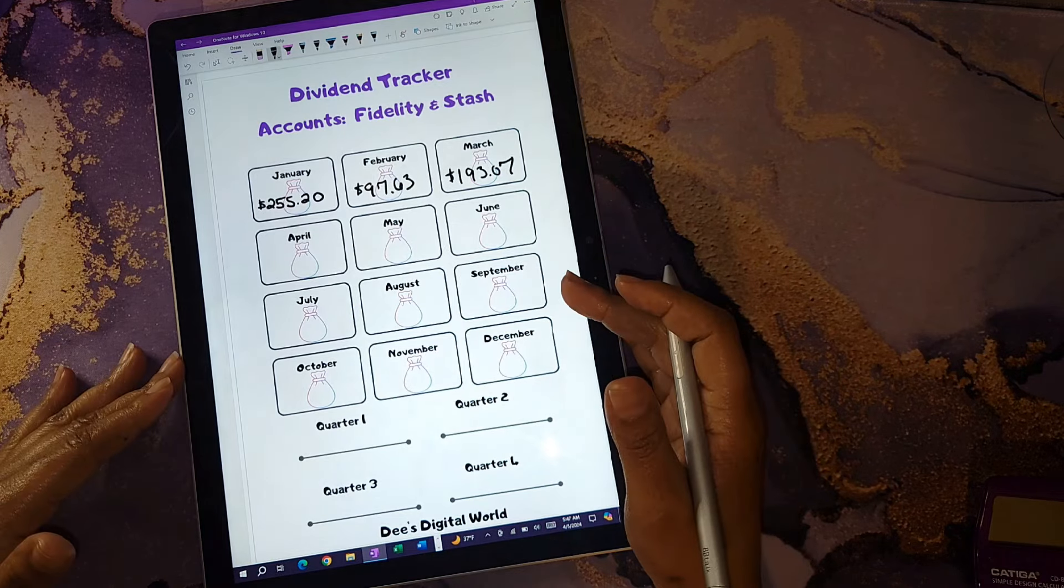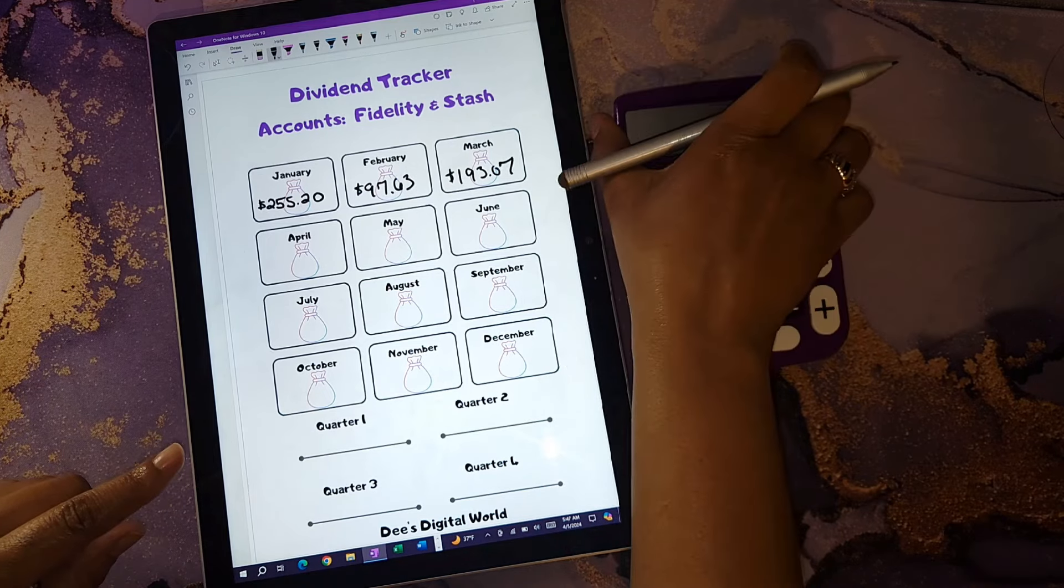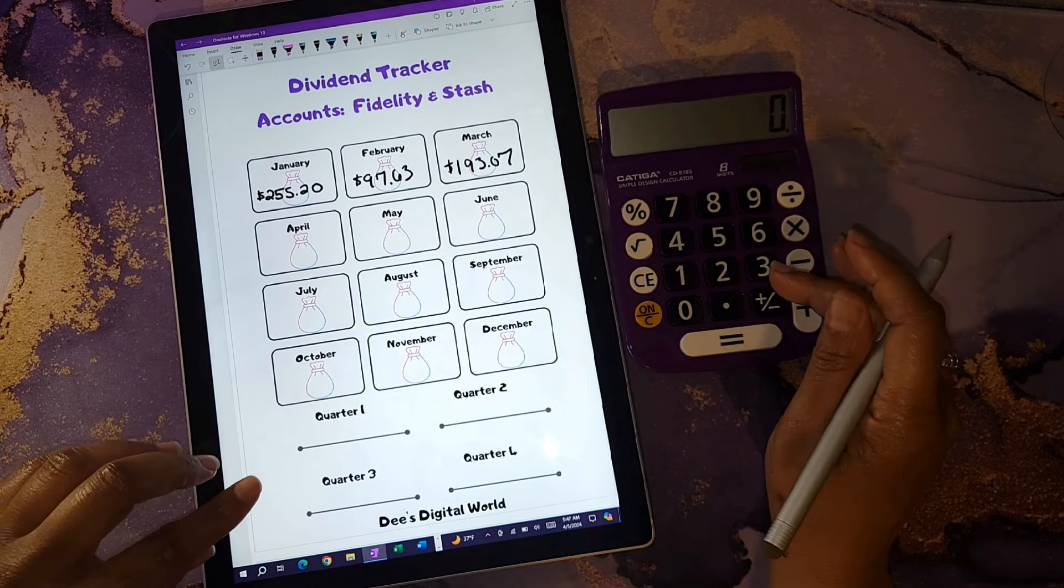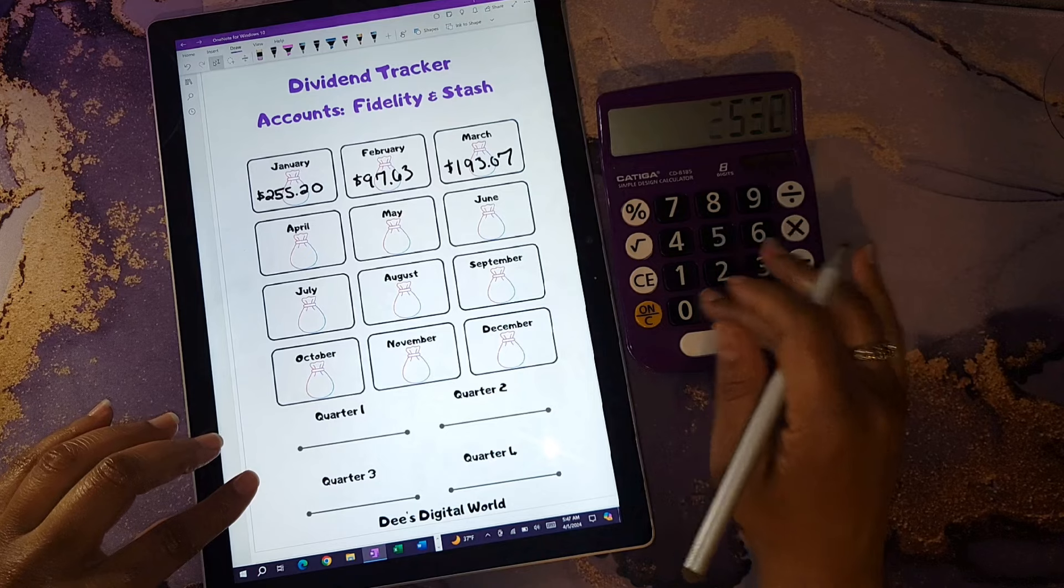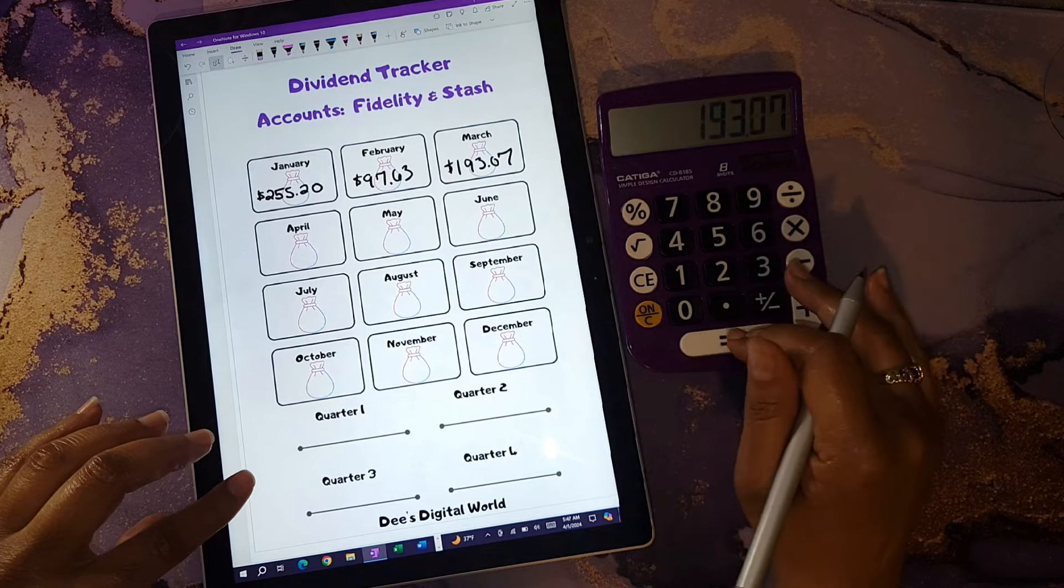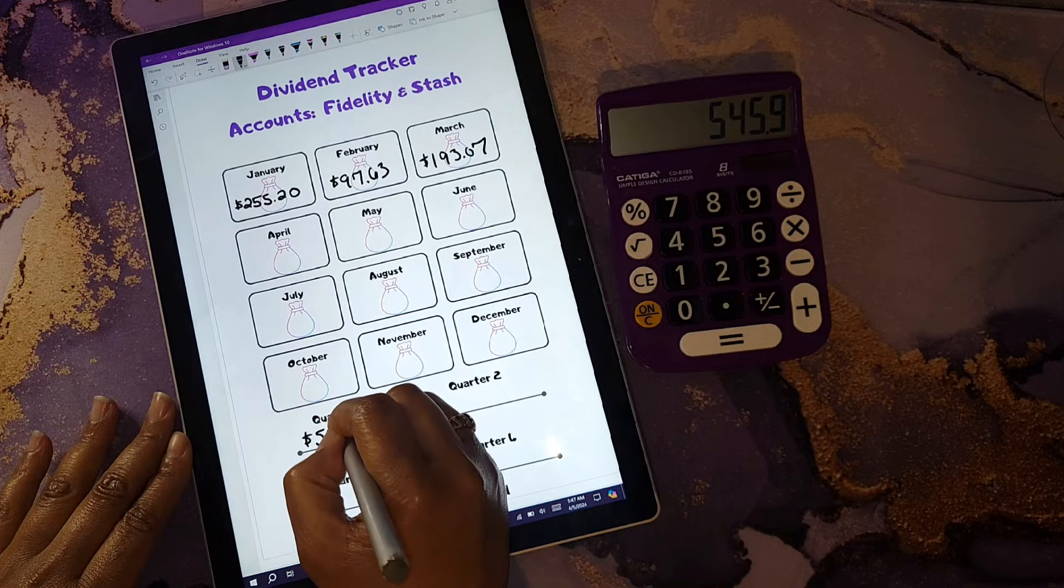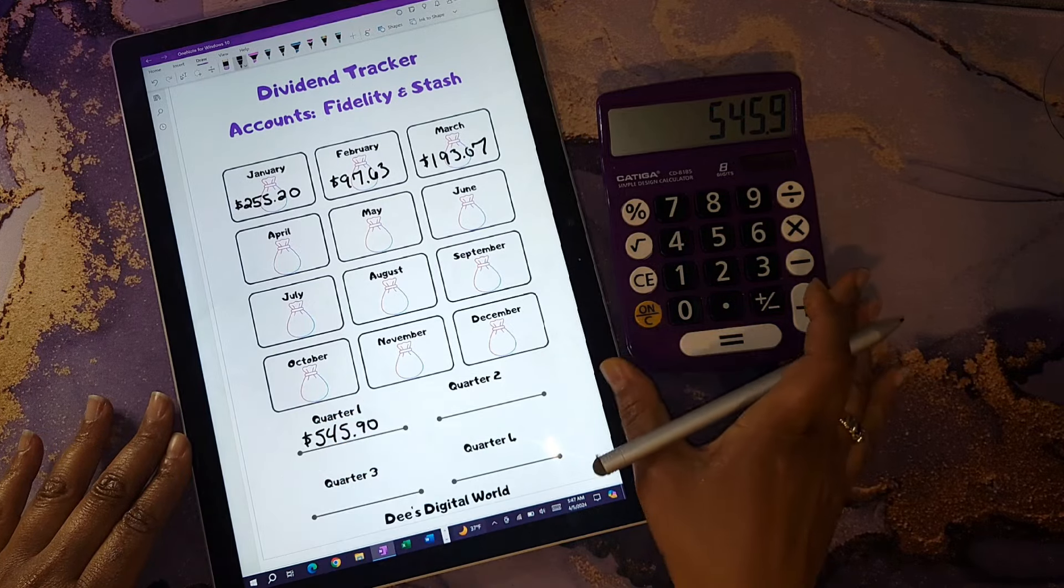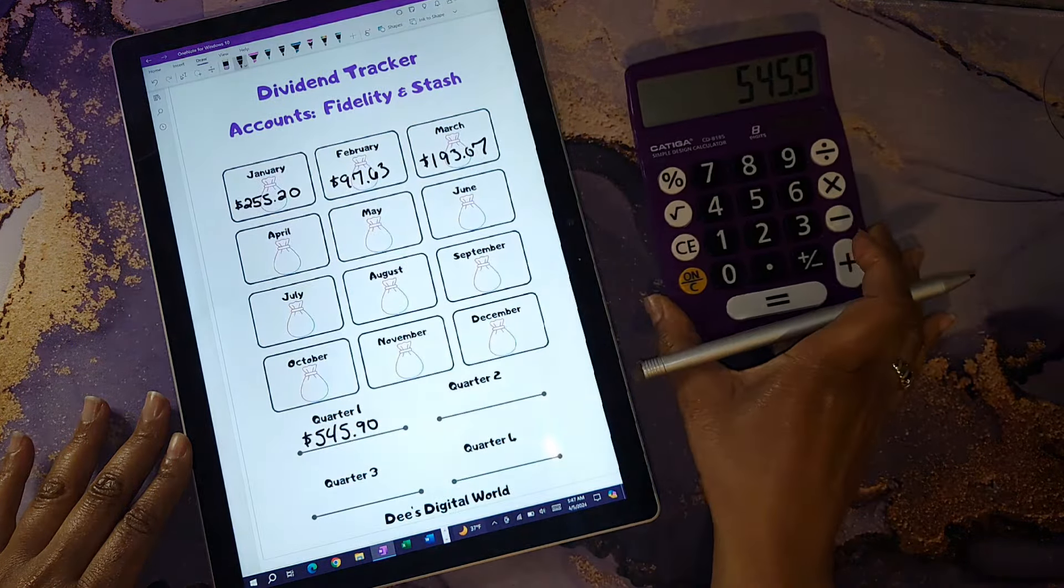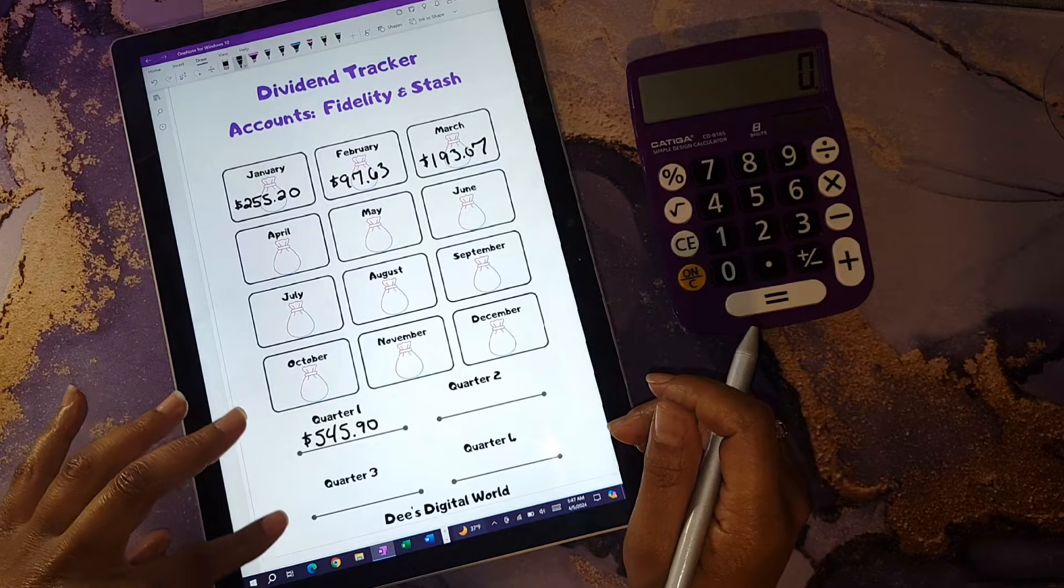So I am very appreciative of that. That was quite a bit of money to me. Now let's add up what I was able to bring in for the full quarter of 2024. I do like to track that also, and I track that down here at the bottom of this tracker. So $255.20 plus $97.63 plus $193.07, that's a total of $545.90. This right here is passive income at its finest, and since I do have most of my dividends reinvested, that just helps me build up my shares by reinvesting those dividends back into those shares.